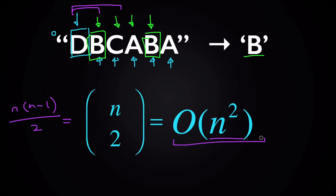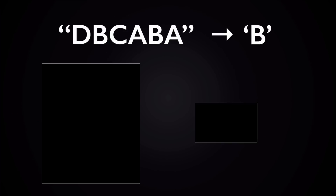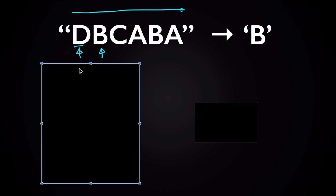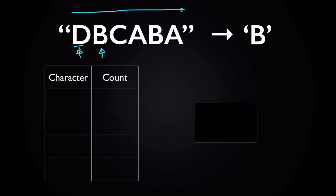Let's see if we can do any better than that. Here's a more efficient solution. Instead of checking every potential pair of characters, we're going to go through the string only once from left to right, character by character. As we see each character, we're going to store it in a data structure such as a set, a dictionary, or a hash table, to show that we've seen this character already.